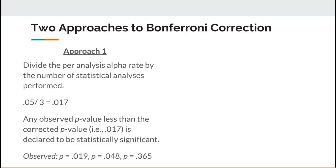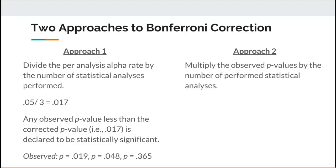The second approach to conducting the Bonferroni correction is essentially the opposite or reciprocal approach, which is to multiply the observed p-values by the number of performed statistical analyses. You're going to get exactly the same conclusions whether you use Approach 1 or Approach 2. The observed p-values are the same as before: 0.019, 0.048, and 0.365.